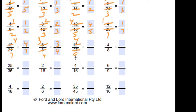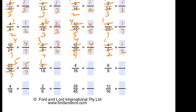3 times 4 is 12 and 3 times 9 is 27, so 4 over 9 is the simplified form. 4 times 1 is 4 and 4 times 2 is 8, so 1 over 2. 5 times 5 is 25 and 5 times 7 is 35, so 5 over 7. 2 times 1 is 2 and 2 times 9 is 18, so 1 over 9.